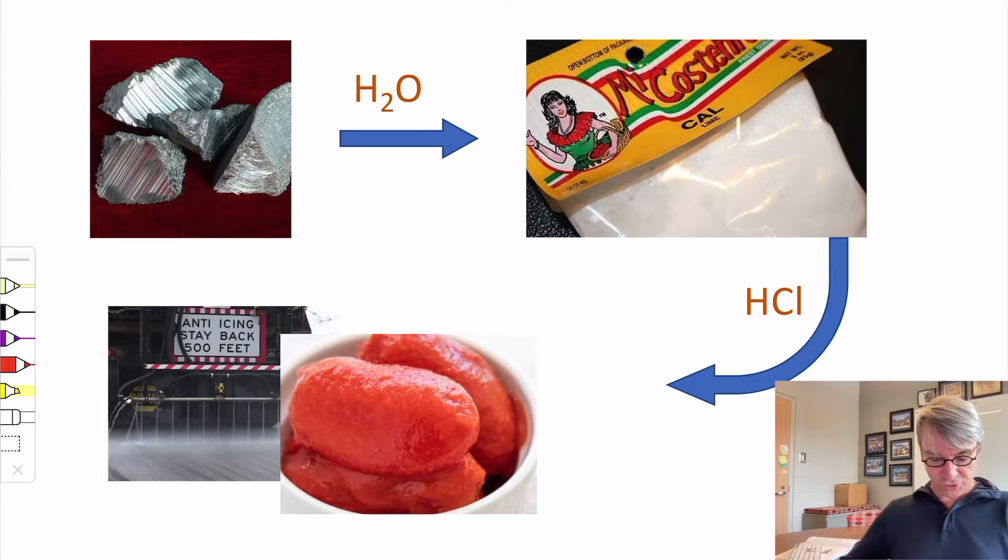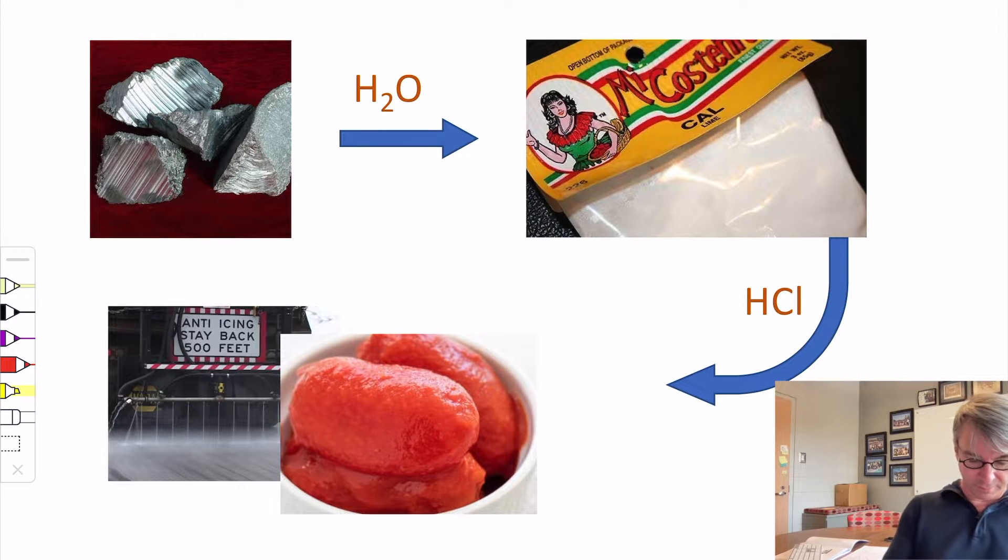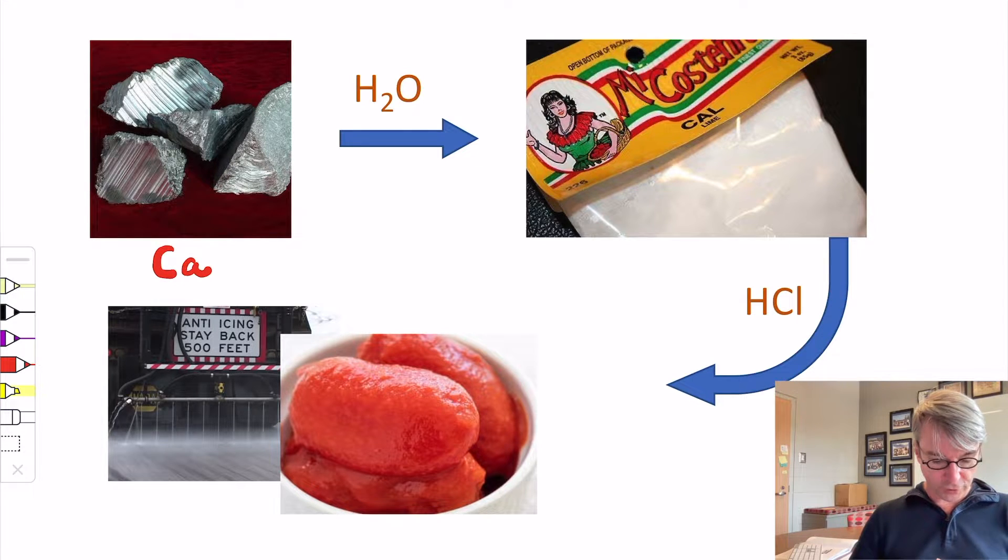Today's lab is going to start with the reaction of calcium. So this is calcium metal. The photograph I picked of it is untarnished calcium. It's been recently sliced with a knife so it's shiny. The calcium you see is going to be dull because it's got an oxide coating, just like when silver tarnishes.